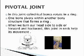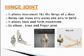Pivotal joint: in this joint, a cylindrical bone rotates in a ring. One bone pivots within another bony structure that forms a ring. When we turn our head side to side or forward and backward, this joint in the neck helps its movement. Hinge joint: it allows movement like the hinge of a door. Bones can move along one axis to bend; it allows back and forth movement. Examples include the elbow, knee, and finger joints.